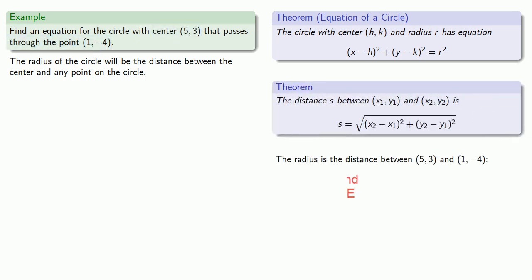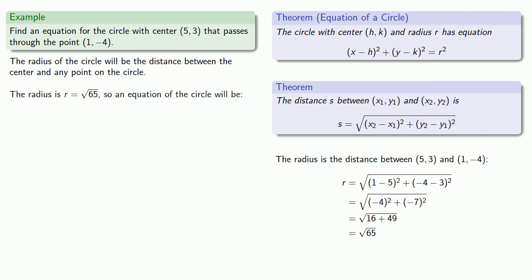So the radius will be √65. So an equation of the circle will be (x - 5)² + (y - 3)² = 65.